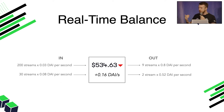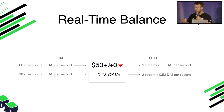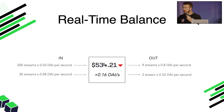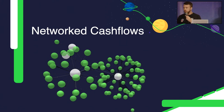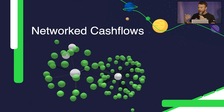You can operate a business with very little cash because all your funds are moving in real-time every second. When businesses start adopting this — paying their employees, accepting subscriptions — all of this is interconnected. We have what we call networked cash flows: funds streaming through the economy every second from one account to another without any friction. And we can do this all on-chain.